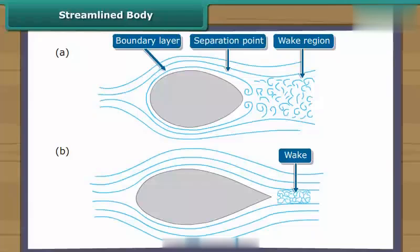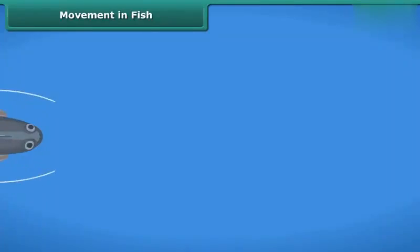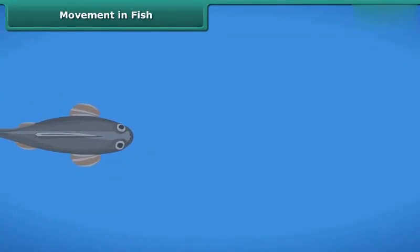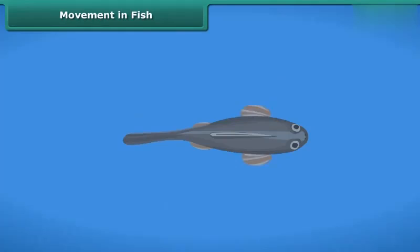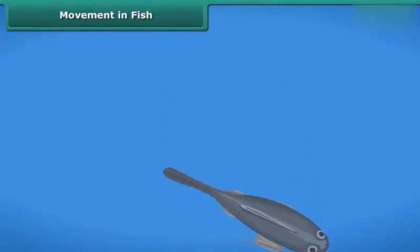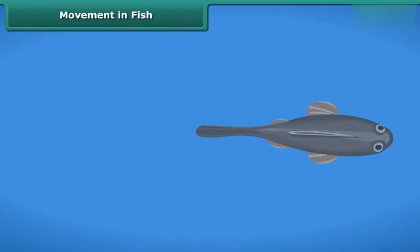The shape of many objects moving through air or water is designed to reduce friction — this shape is called a streamlined body. Fish have a streamlined body which helps them move fast in water. Fish swim with the help of their fins. The tail moves from side to side and helps the fish swim in the right direction. Some fish move by bending their bodies from one side to another in quick succession, producing a thrust that helps them move forward.